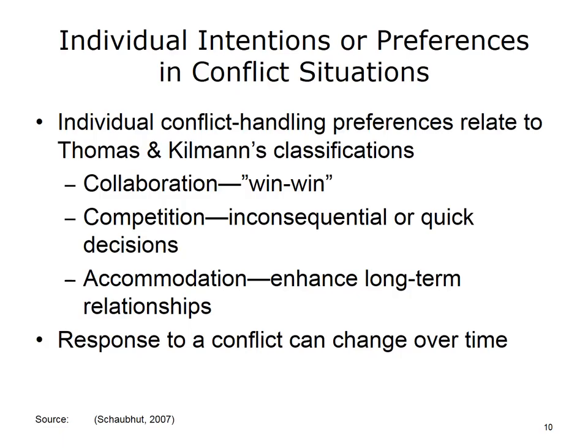Thomas and Kilman's conflict-handling styles provide a menu from which appropriate behaviors can be chosen based on a given circumstance. The collaborative — assertive and cooperative — approach is generally advocated as it results in a win-win. However, the competitive approach can be appropriate for conflicts that are inconsequential or in need of quick, decisive action. Alternatively, an accommodating style that is unassertive and cooperative can be appropriate when a party seeks to continue and enhance a positive, long-term relationship with another. How an individual responds to a particular conflict can change and evolve over time.